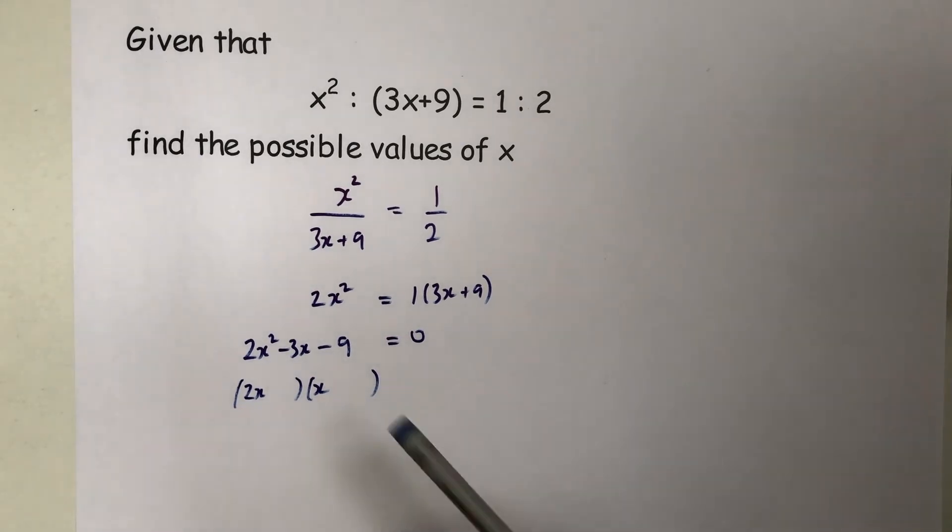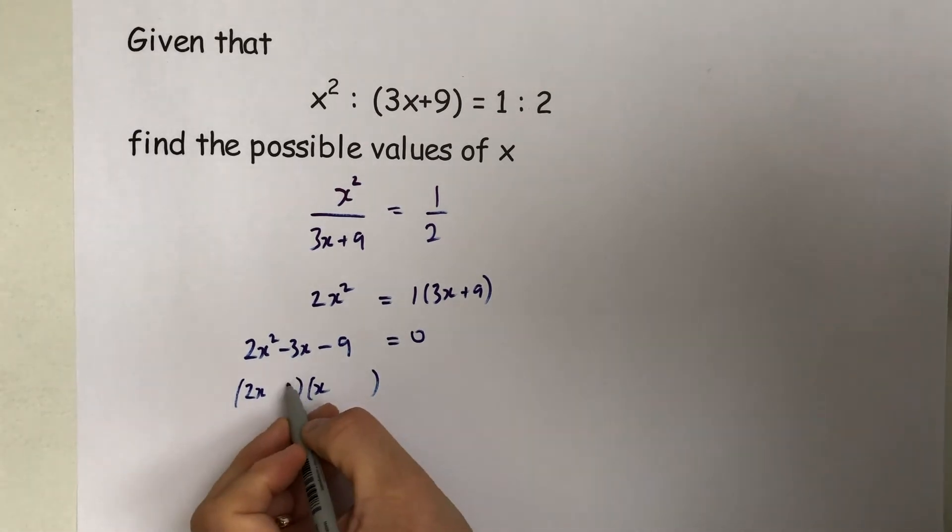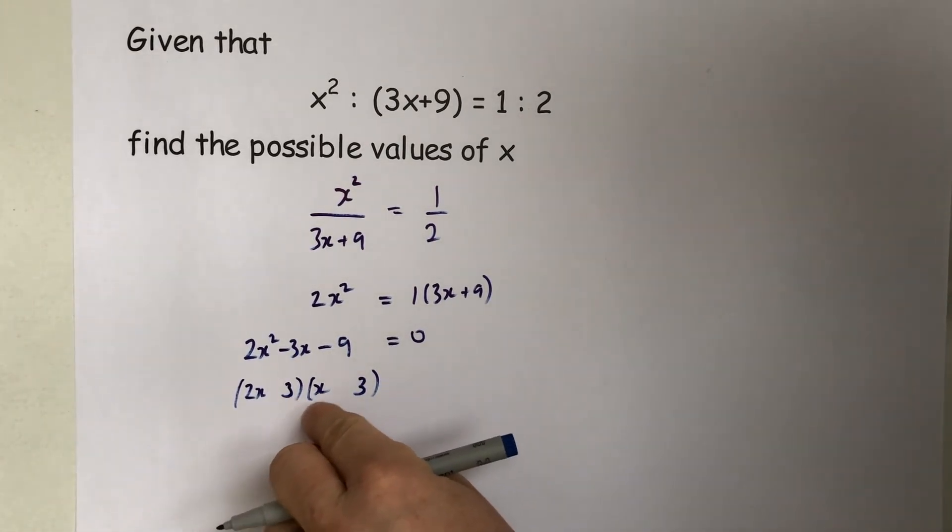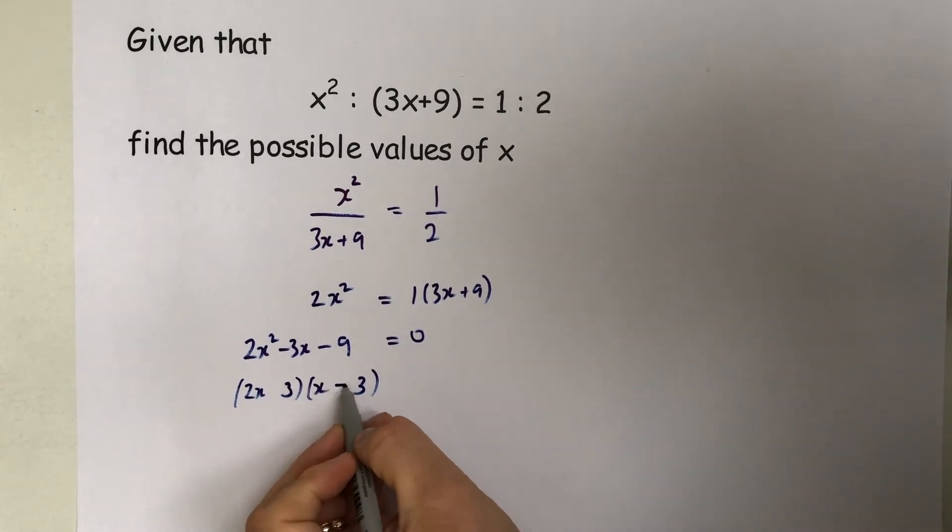Now 9 can be 1 times 9 or 3 times 3. We'll try 3 times 3. This would produce 3x, this would produce 6x, and if I make that 6x and...